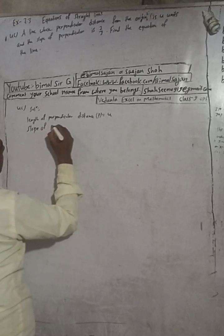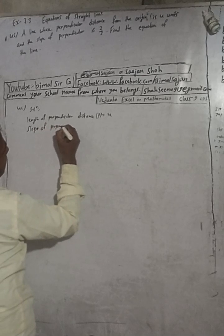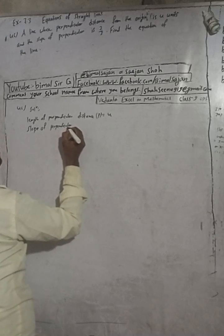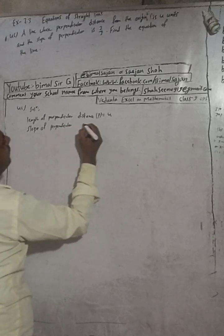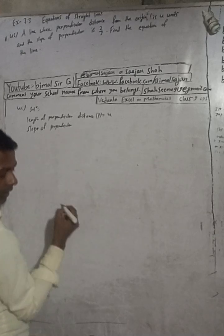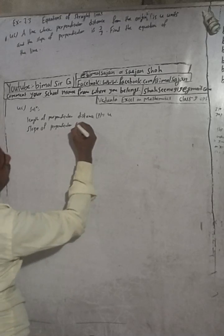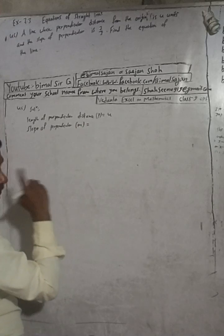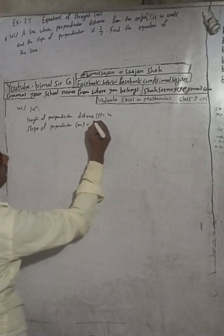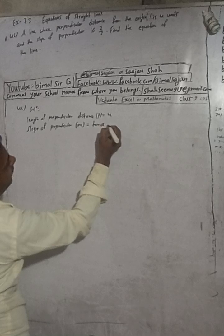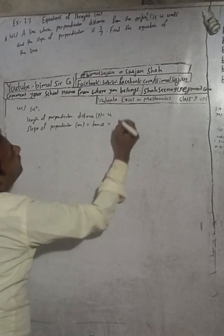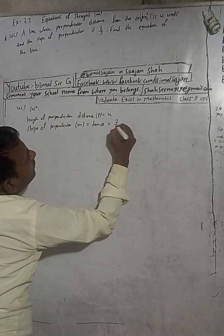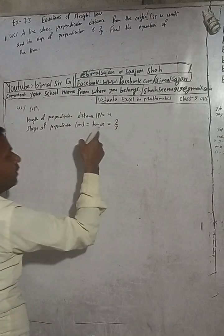Slope is indicated by M, and M is equal to tan alpha. The value of tan alpha is given here as 2 by 3. Now let's solve this.